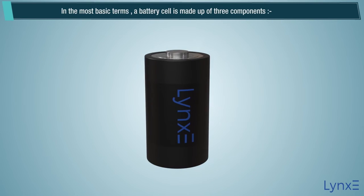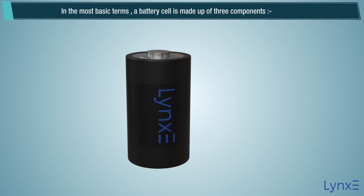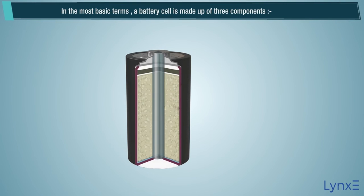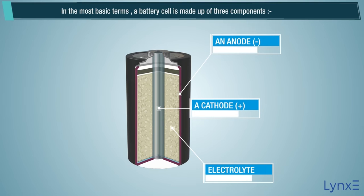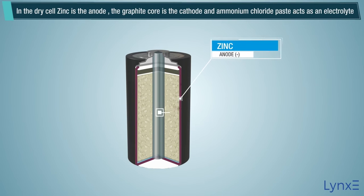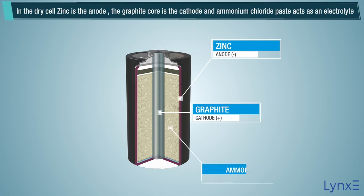In the most basic terms, a battery cell is made up of three components: an anode (negative), a cathode (positive), and the electrolyte. In the dry cell, zinc is the anode, the graphite core is the cathode, and ammonium chloride paste acts as the electrolyte.